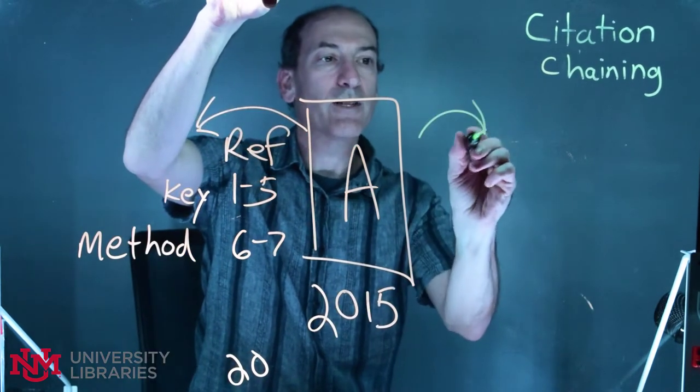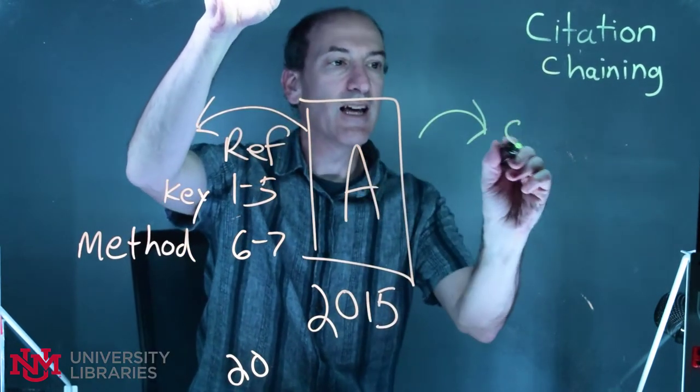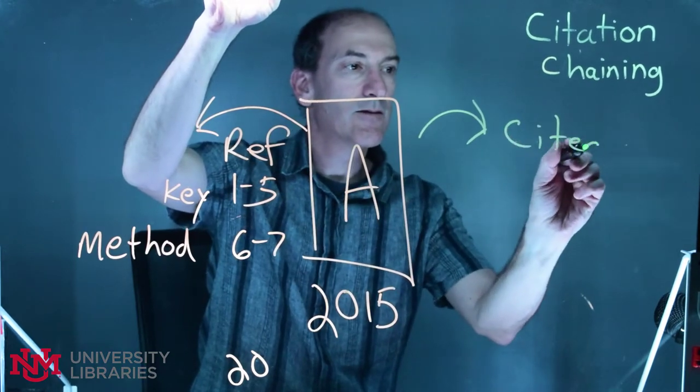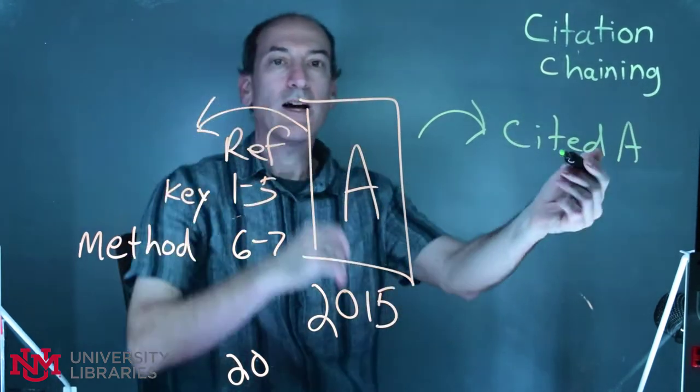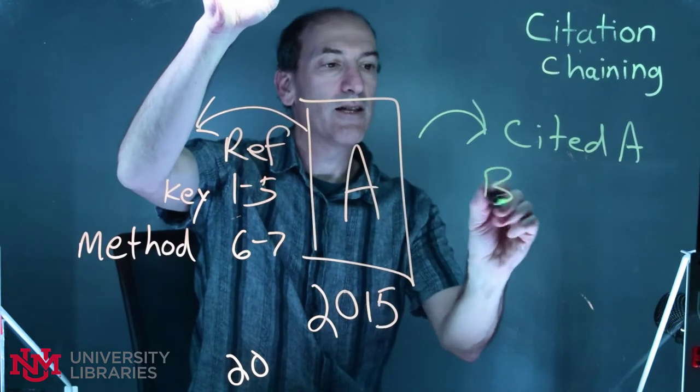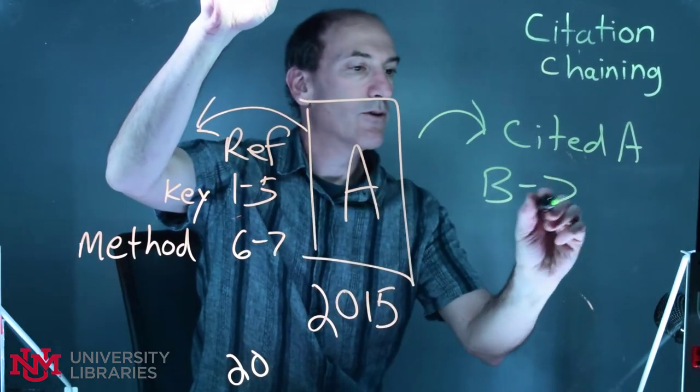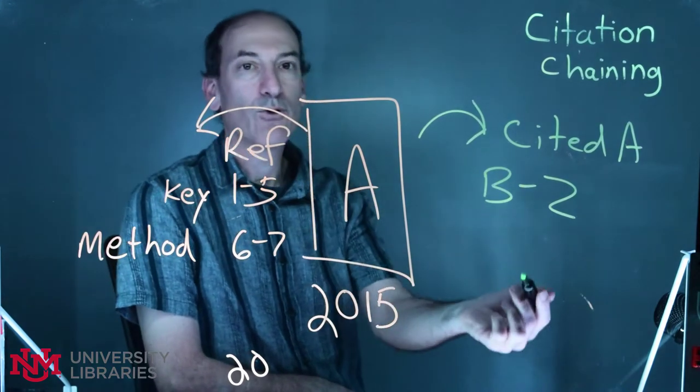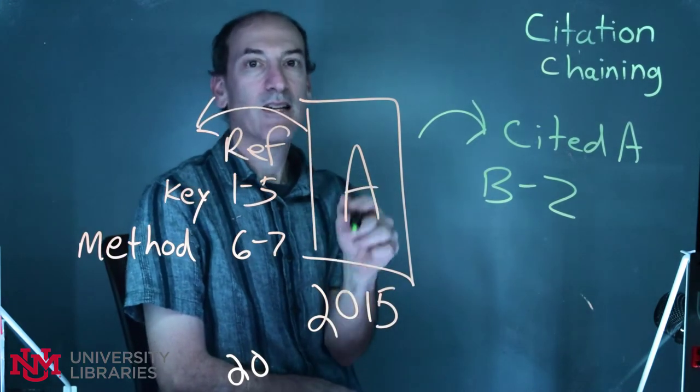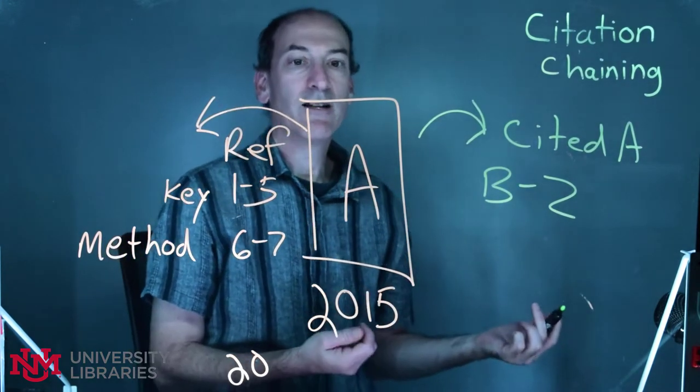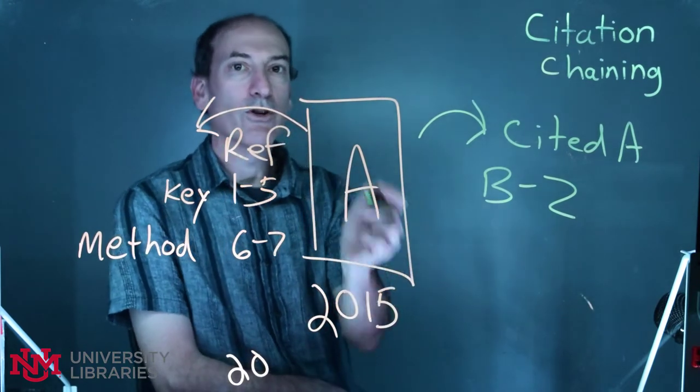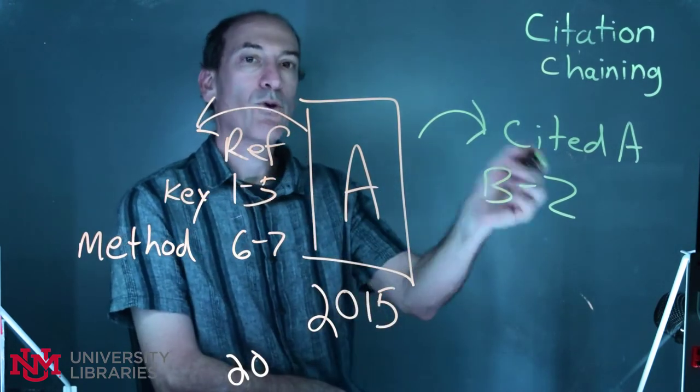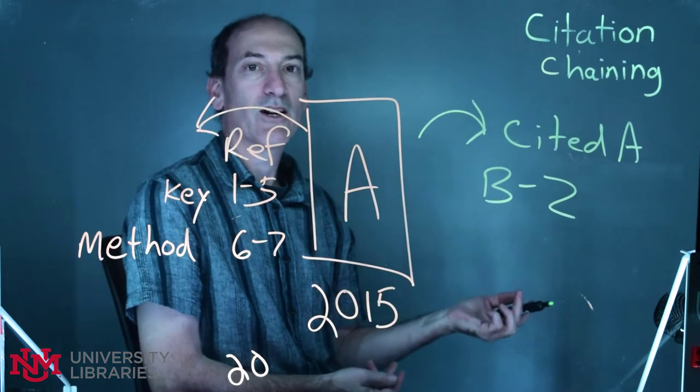Next, what you can do is go forward in time and look at who cited A. So now we can look through, maybe say that it's been cited 25 times, so we have articles B through Z. A few of them can be quite related to A and some other ones maybe not. But with one article you can go backwards in time and go forward in time and find some quality content.